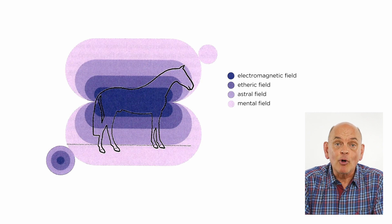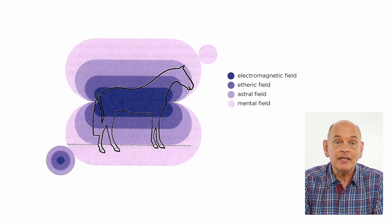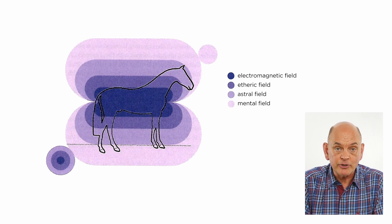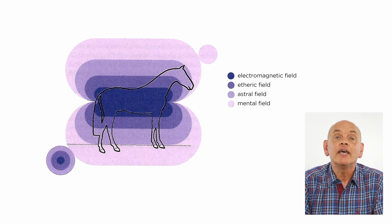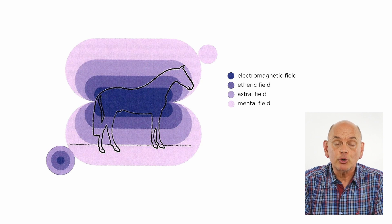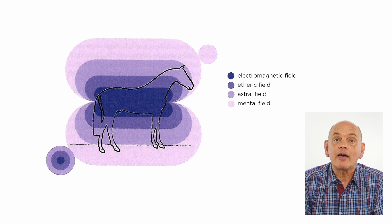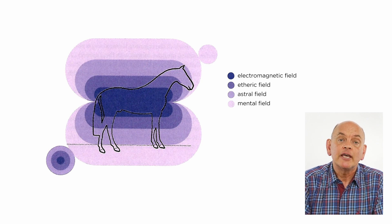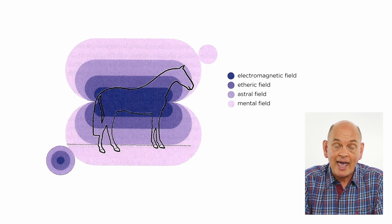The animal has gross matter, its body, electromagnetic field, an ether body with meridians like we have in acupuncture. You can find them in the animal body. It has an astral body with chakras, and then it wants to connect with mental energy, to have self-consciousness. This mental energy sphere is just above the head of the animal.